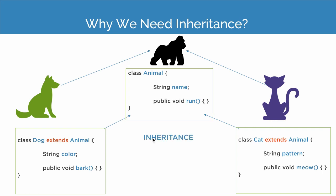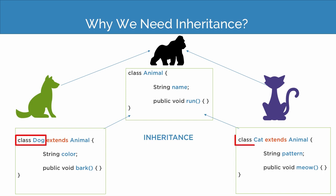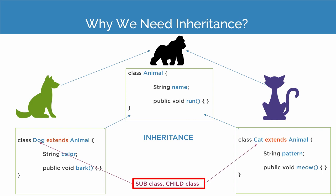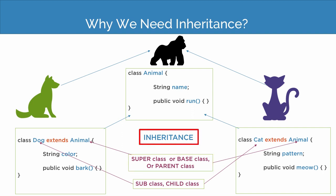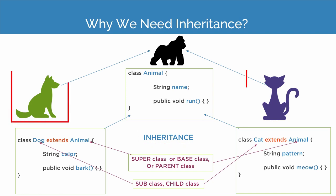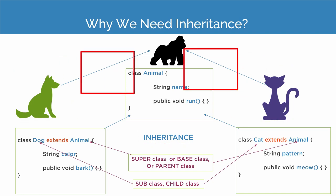This concept of inheriting the property from one class into another is known as inheritance in Java. The classes of dog and cat are known as the subclass or child class, and the class of animal is known as the superclass, base class, or parent class. You can correlate the concept of inheritance with your day-to-day life — like you get a few properties from your parents. Similarly, the class dog and class cat are getting a few of the properties from the class of animal.